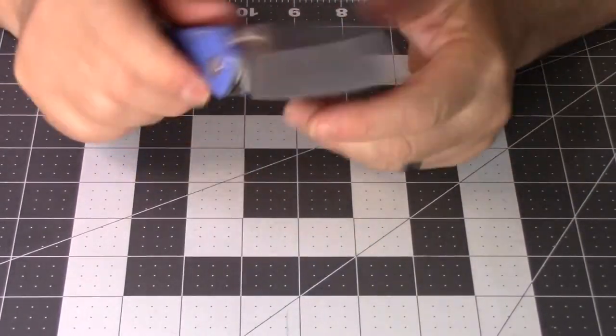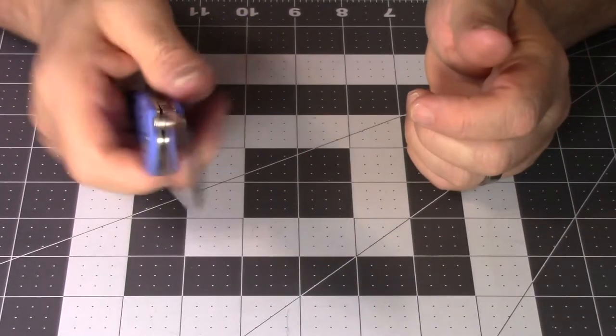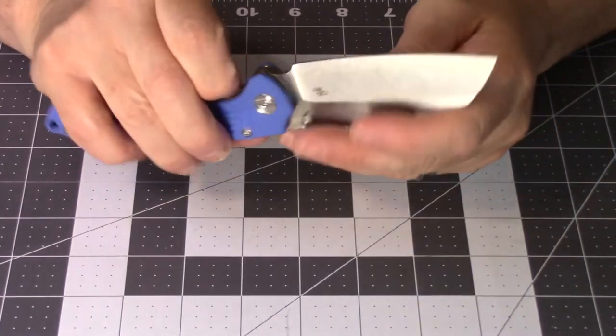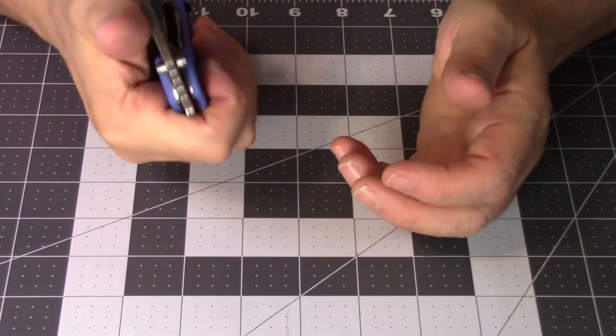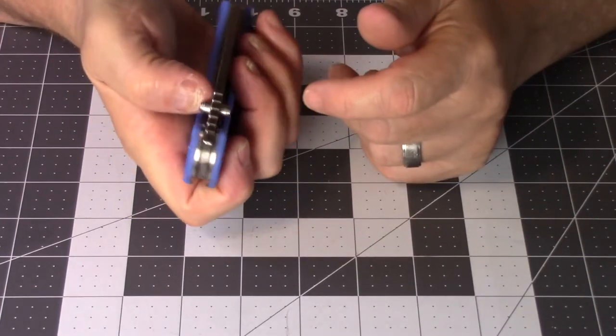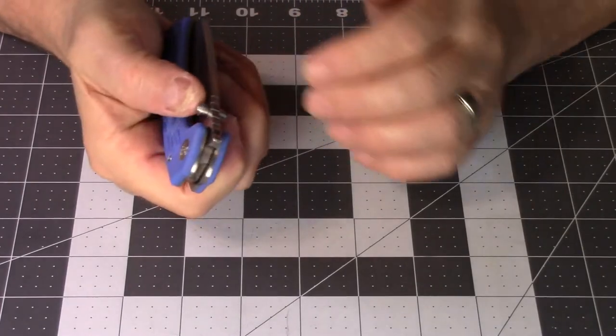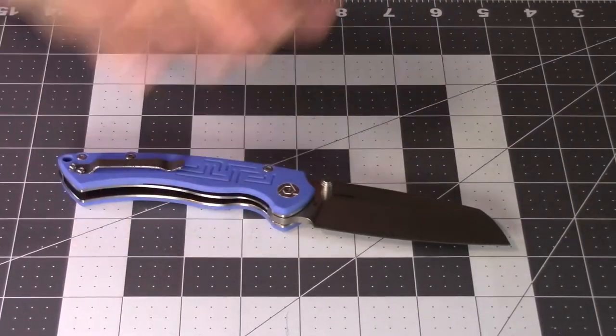It has really good action. You can tell by the feel it has ball bearings. You're pushing a pretty good chunk of steel there and it flips open no problem at all. It's got a liner lock that locks up a good fifty percent and blade centering is dead on perfect.